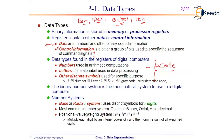Eventually, any data type will get translated to the specific data type understood by the computer system. Different computer systems are implemented with different number systems. I may use the terms language, number system, and data type interchangeably — they all refer to the same thing. The computer system uses one number system to which everything gets translated.